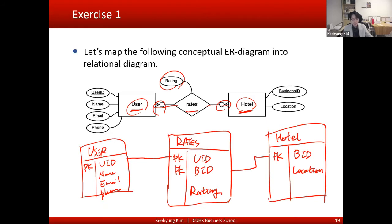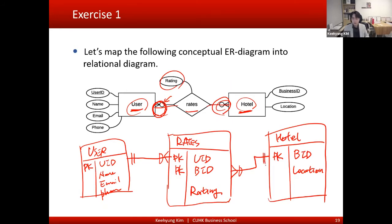From the user's perspective, hotel was connected by zero and many, so we put zero and many here. For the cardinality on the user side we put one and one, and for the hotel side we put one and one. So this will be the final solution for exercise one.